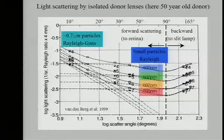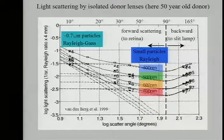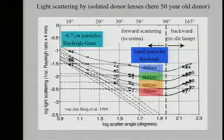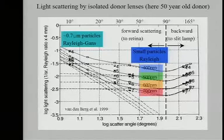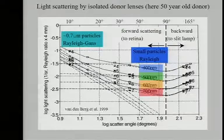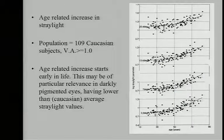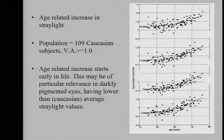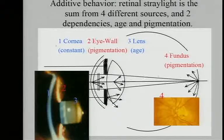We measured light scattering in the eye lens using isolated donor lenses and measuring light scattering directly from those donor lenses. We found strong wavelength dependence for backward directions, and for forward directions — the directions important for vision and glare — the wavelength dependence was less strong but still very clear. We also showed the increase with age according to cataract and the normal aging process.